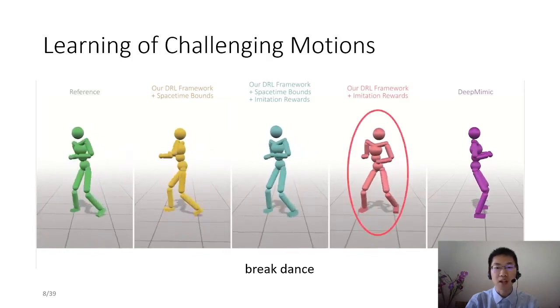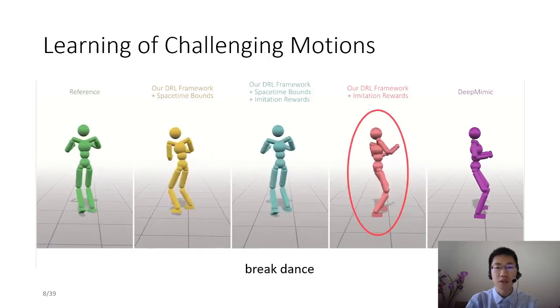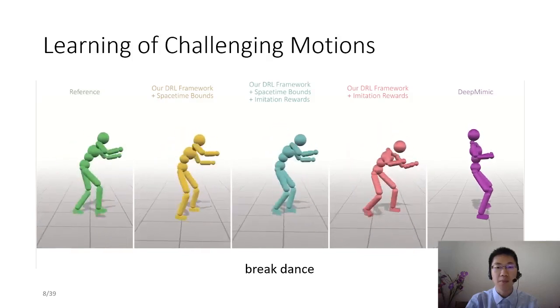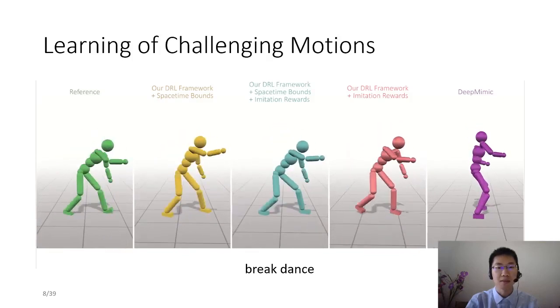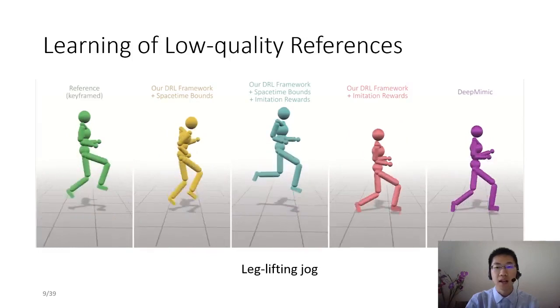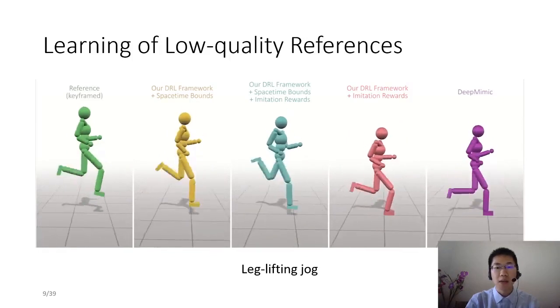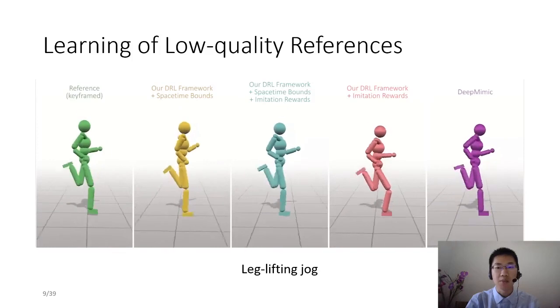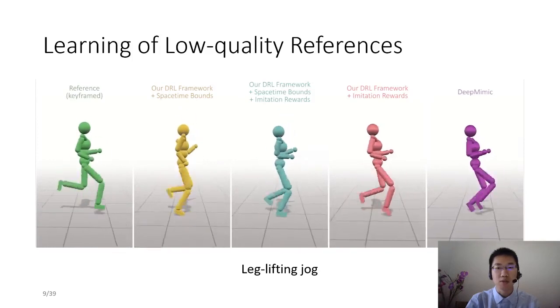Our framework can learn controllers that reproduce sharp turns in breakdance while tracking-based methods can't. Second, on low-quality reference, our method can find physically plausible solutions that realize reference motion.